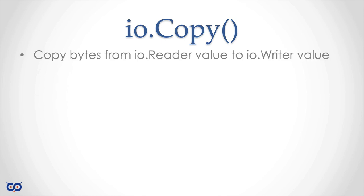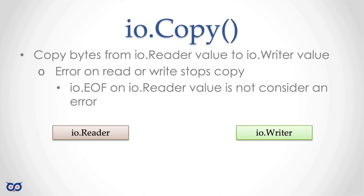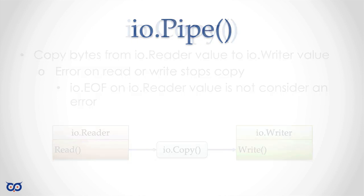Let's talk about the IO copy function. I'm skipping IO writeString because that's pretty straightforward — nothing much to illustrate. With IO copy, it copies bytes from an IO reader value to an IO writer value. You give IO copy these two values — a reader and a writer — and it takes care of copying the data until it encounters an error. The IO copy function also returns how many bytes have been copied and an error if it encounters one. If IO copy encounters EOF on the reader, that's not considered an error.